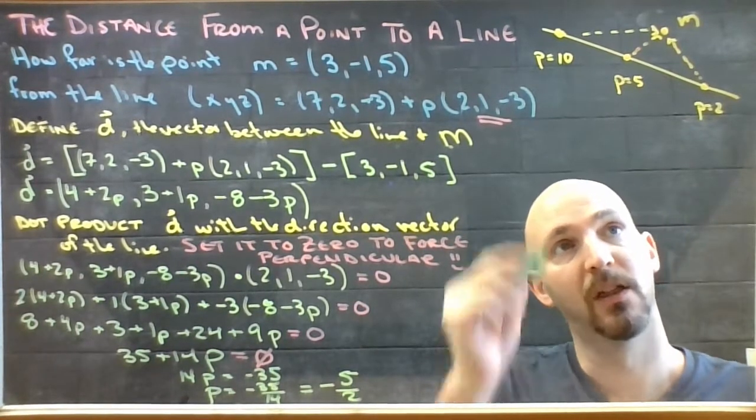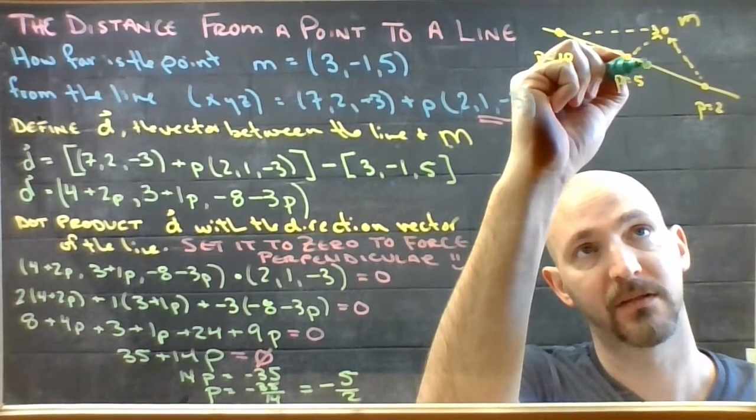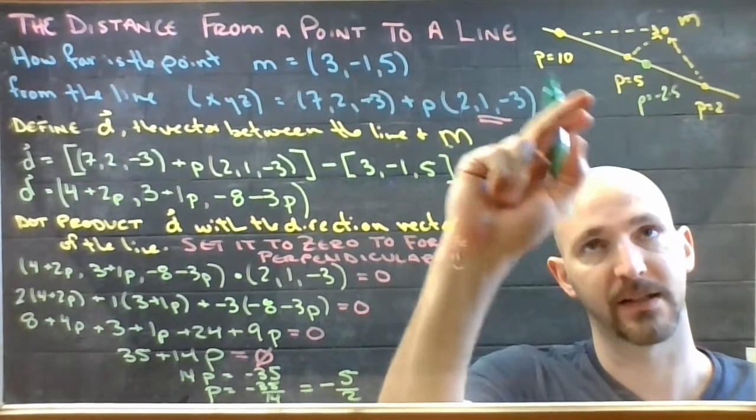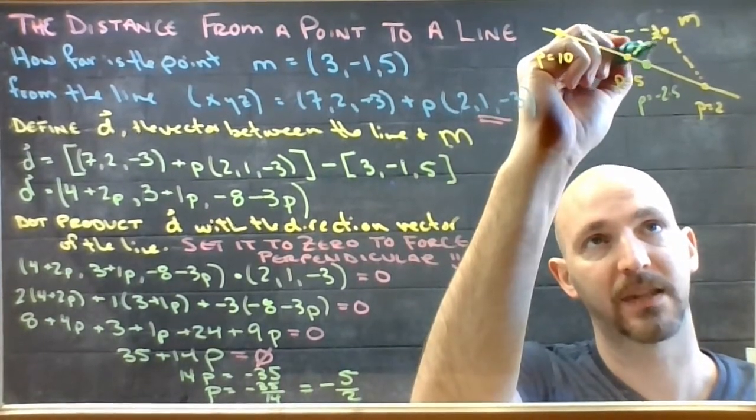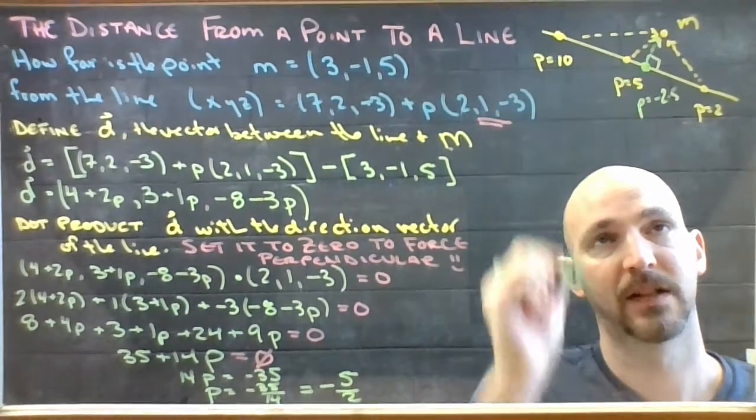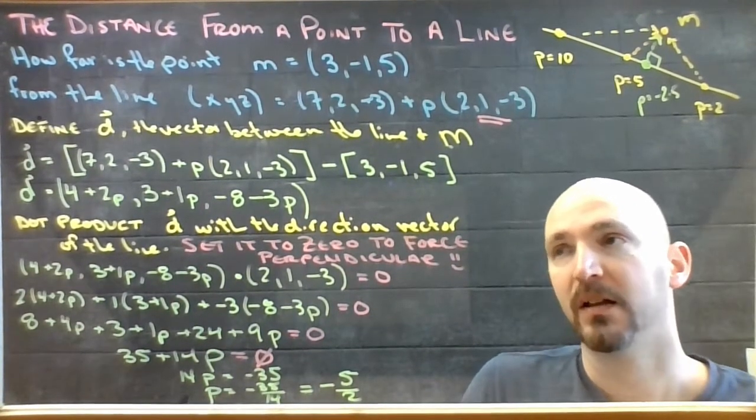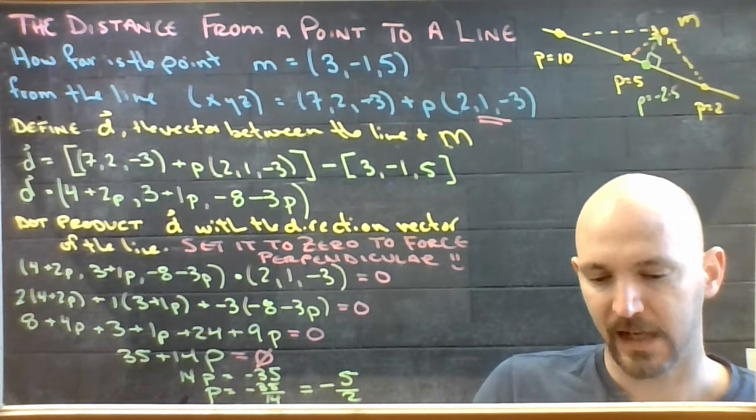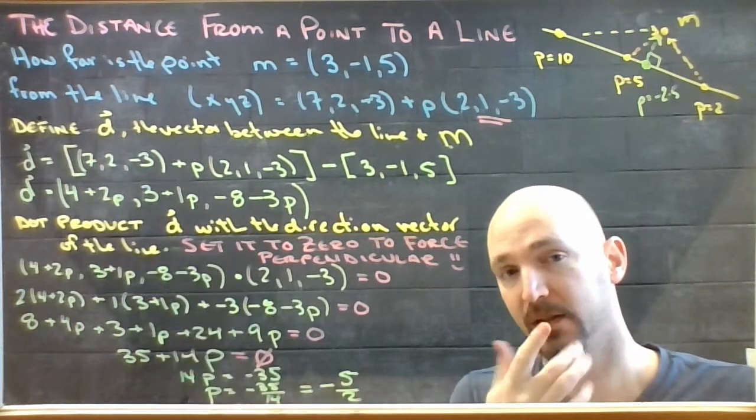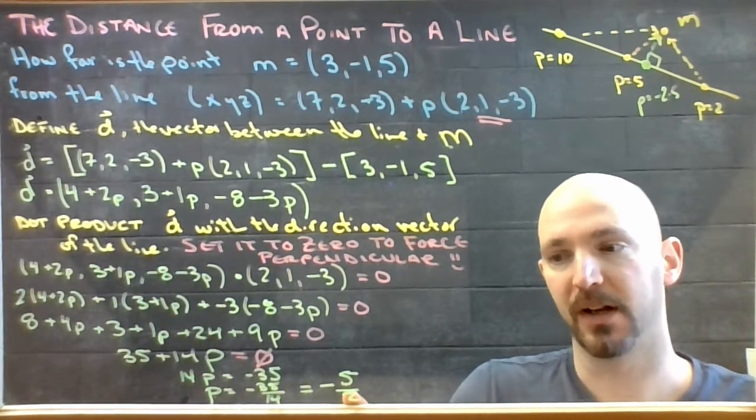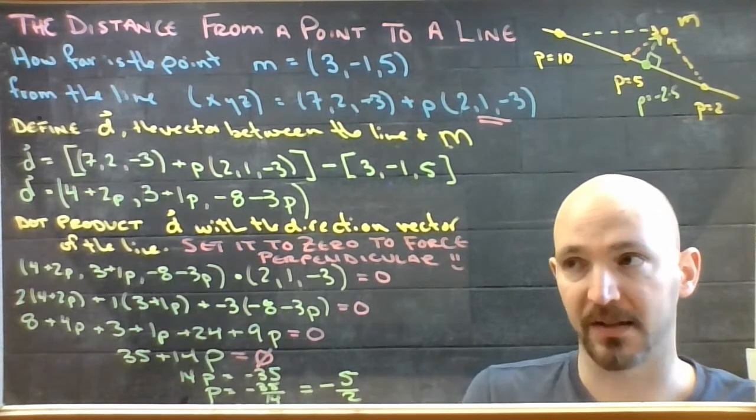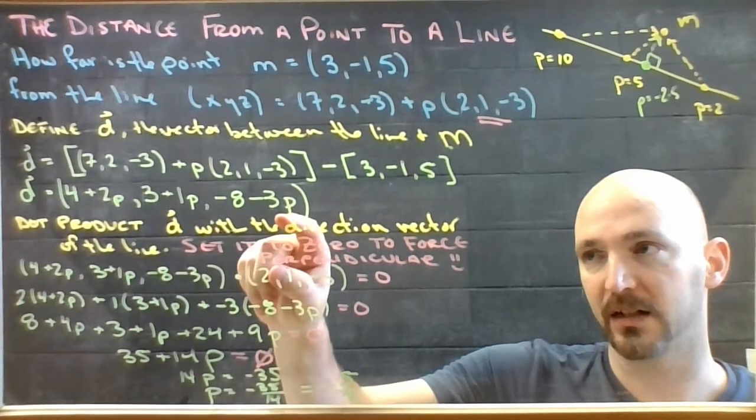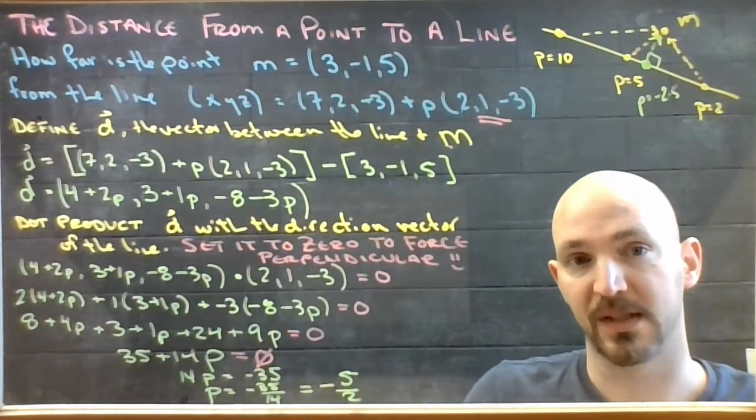So when P is -2.5, I know that doesn't work on my scale, but I end up with D pointing this way and making a 90 degree corner. Now that I've got that, I can go back to my vector D here. I know the parameter of P that makes it the shortest possible distance. So I'm going to take this P value and put it here, here, and here.